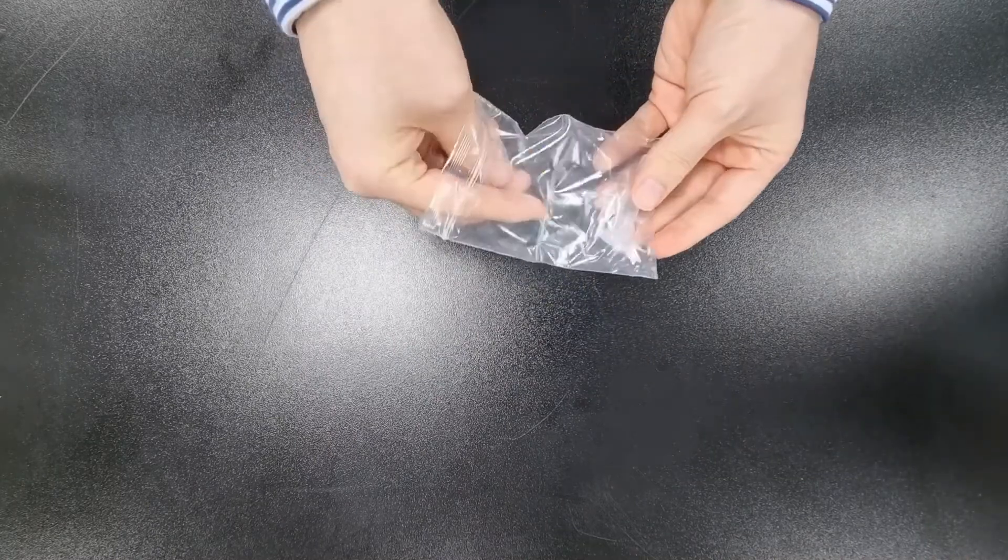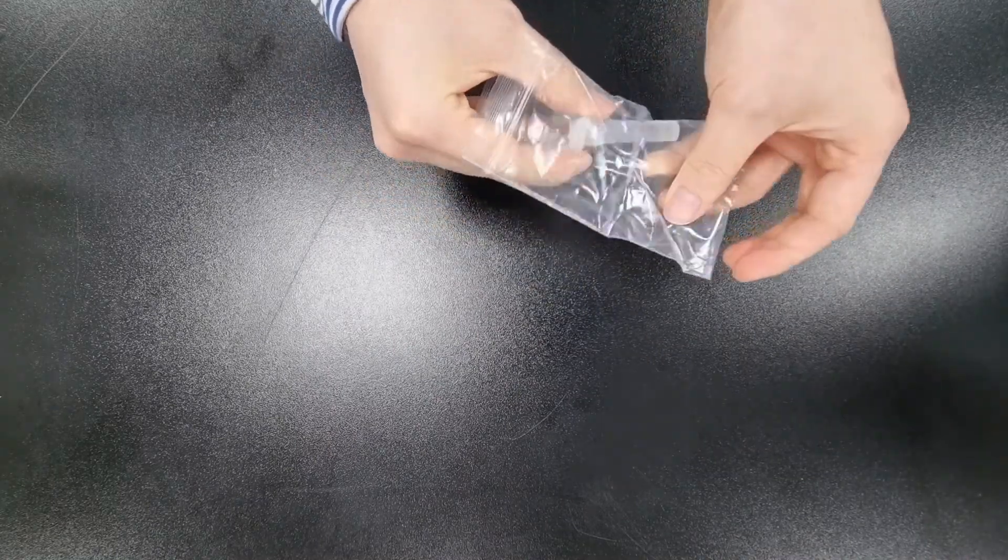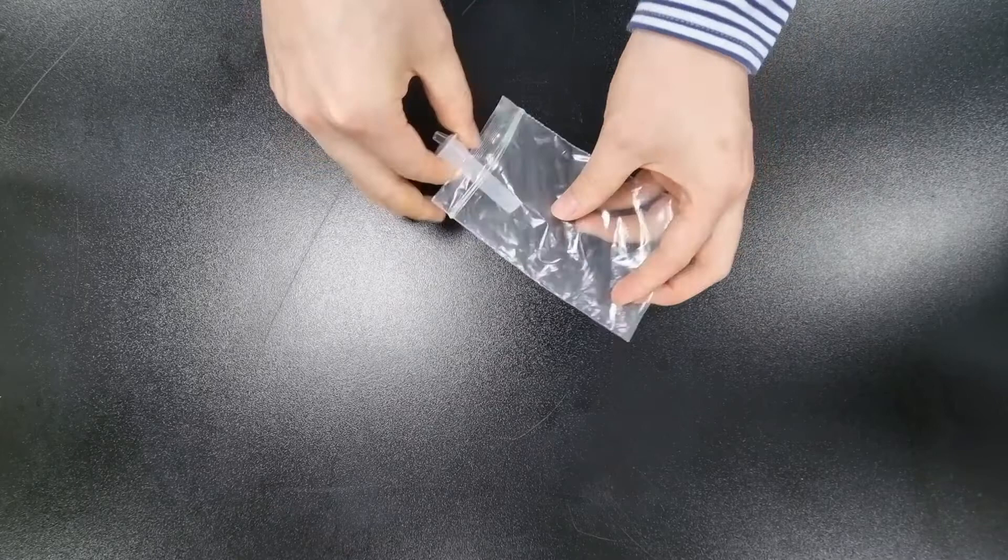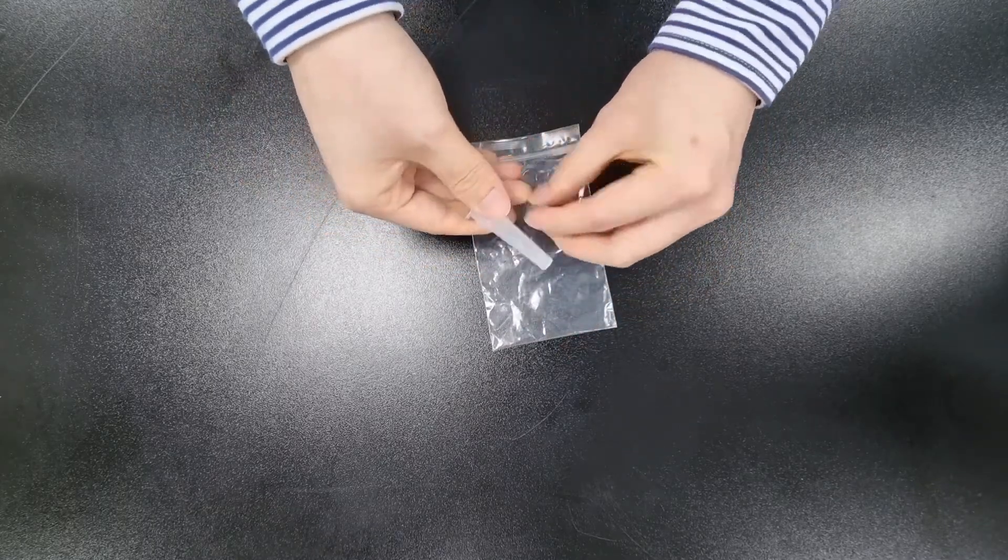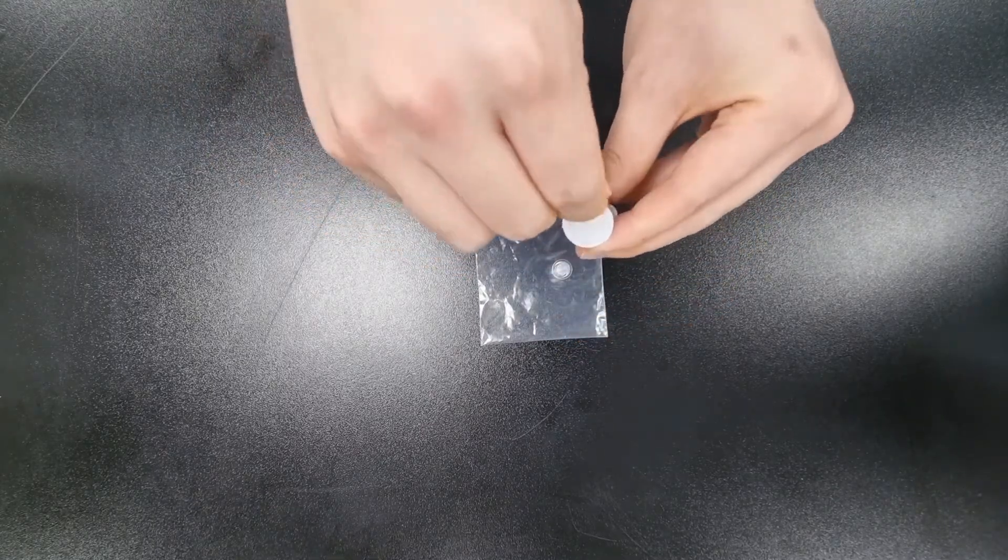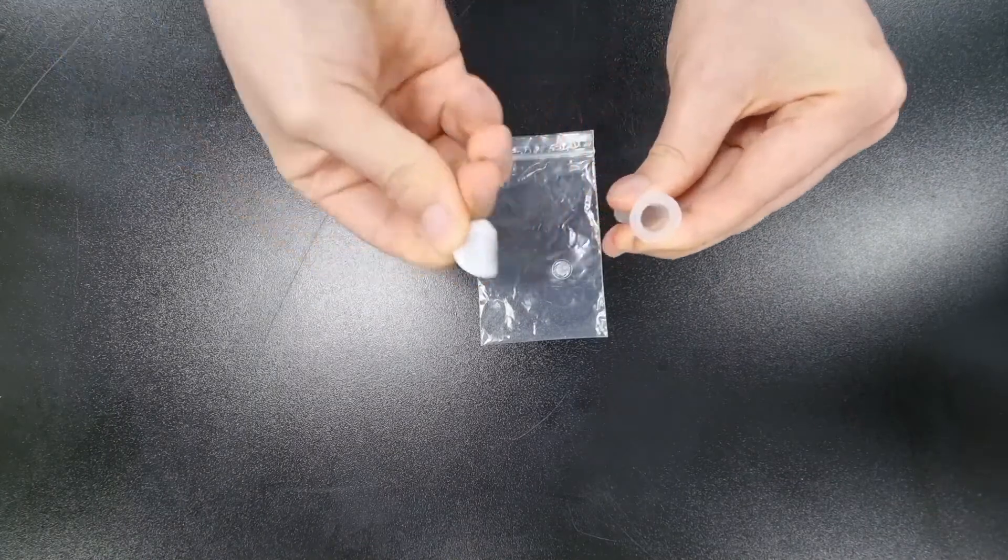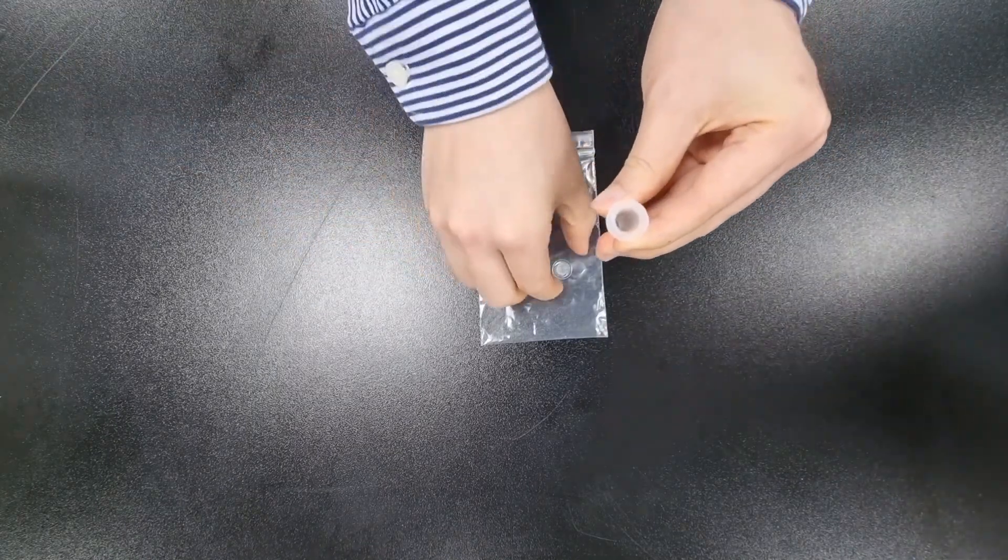Take out the sample diluent and drop cap from the zipper bag. Remove foil of sample diluent tube. Close sample diluent tube by dropper cap tightly.